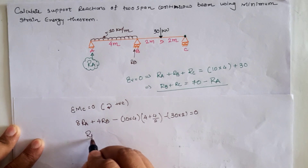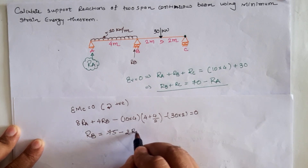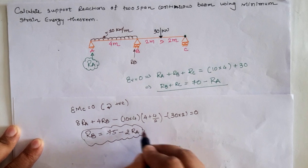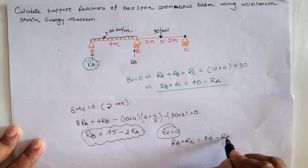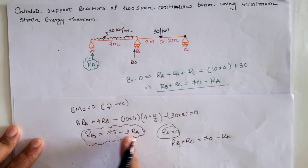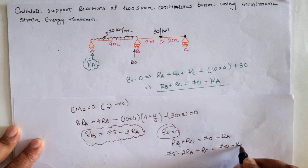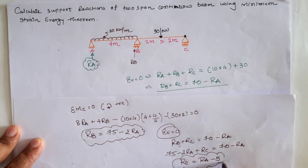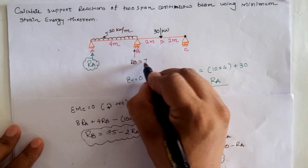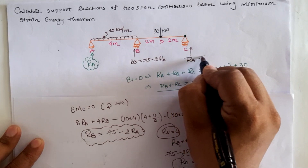Solving this, we get Rb = 75 − 2·Ra. We also have Rb + Rc = 70 − Ra. Substituting the value of Rb as 75 − 2·Ra gives 75 − 2·Ra + Rc = 70 − Ra, so Rc = Ra − 5. Therefore, Rb = 75 − 2·Ra and Rc = Ra − 5.